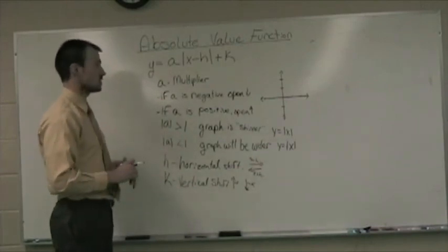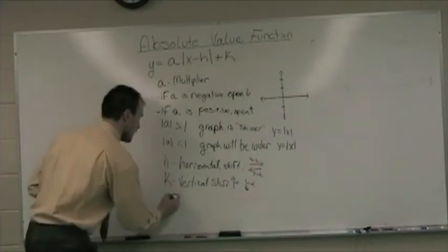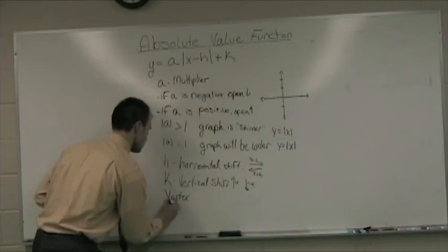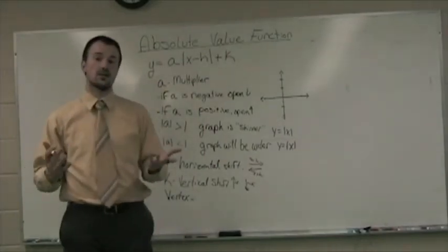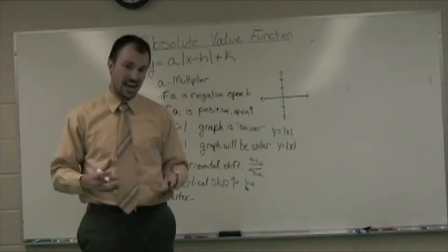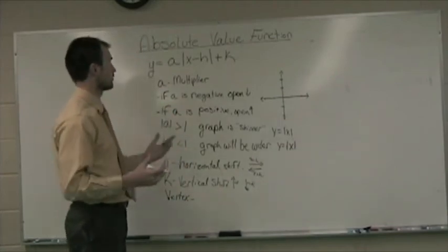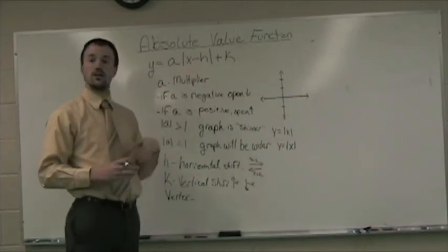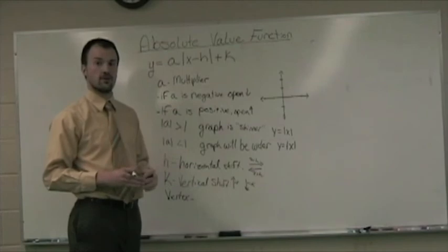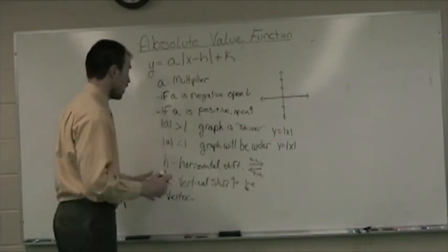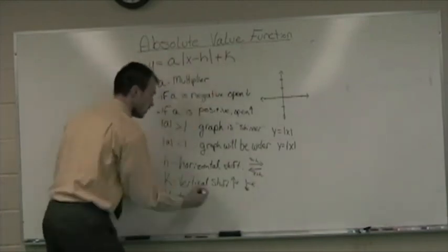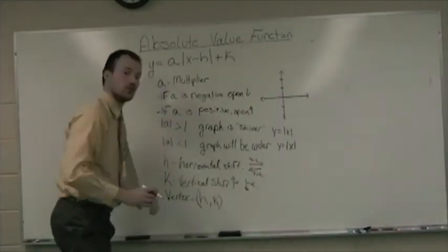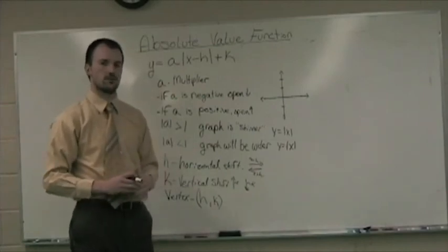So that pretty much explains our variables. Last big thing is that we have a new term called a vertex. And the vertex is either the highest or lowest point on any graph that we have. There are vertices for both the absolute value function and a function we'll study later on called the quadratic function, otherwise known as a parabola. But our vertex in this form is located at the XY point H and K, and that becomes really valuable information later on.